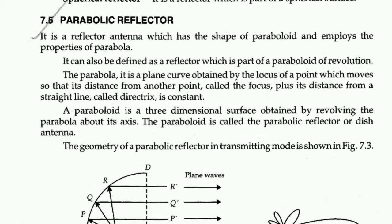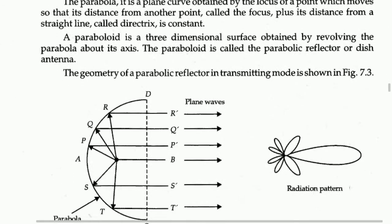We will see the detailed design of the parabolic reflector and some important equations. A parabolic reflector antenna has the shape of a paraboloid and employs the properties of a parabola. It can also be defined as a reflector which is part of a paraboloid of revolution. The parabola is a plane curve obtained by the locus of a point that moves so that its distance from another point called the focus, plus its distance from a straight line called the directrix, is constant. A paraboloid is a three-dimensional surface obtained by rotating a parabola about its axis, also called a dish antenna.